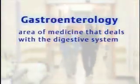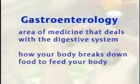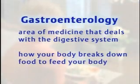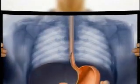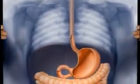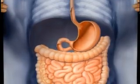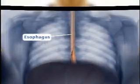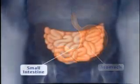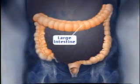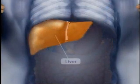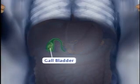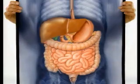Gastroenterology is the area of medicine that deals with the digestive system and how your body breaks down food so that it can be absorbed by your intestines to feed the rest of your body. The digestive system is divided into two main areas. The first area includes the long, winding, muscular tube that goes from your mouth to your rectum, and includes the esophagus, the stomach, the small intestine, the large intestine, and the appendix. The second area includes the liver, the pancreas, the bile duct, and the gallbladder, which help the other organs digest your food.